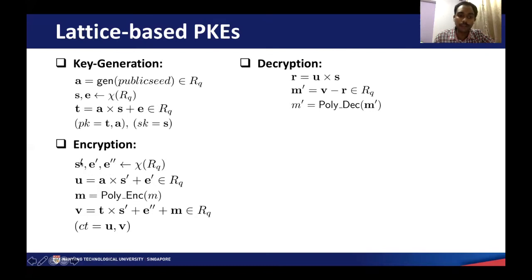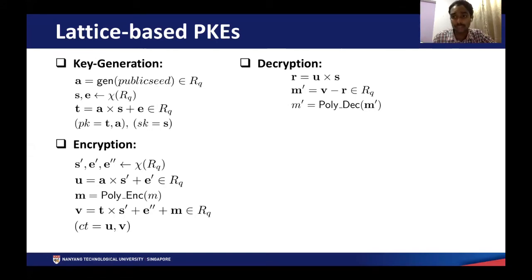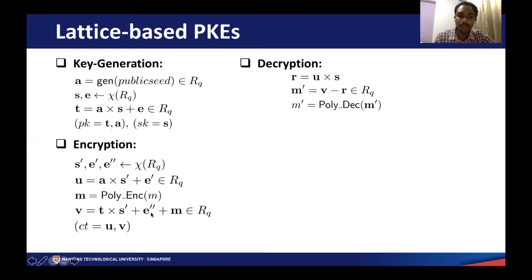In encryption, we sample three ephemeral polynomials S', E', and E'' from a very narrow distribution. We generate component U, which is an LWE instance equal to A times S' plus E'. The message M to be encrypted is a bit vector. Since all computations are performed on polynomials, we need to convert this bit vector into a polynomial. Commonly, one bit is mapped to its corresponding coefficient: if a bit is one, it's mapped to Q/2 (the center of the integer ring ZQ); if a message bit is zero, it's encoded to zero. We then generate another LWE instance T times S' plus E'' and add the encoded message polynomial to this LWE instance to hide it. The components U and V form the ciphertext.